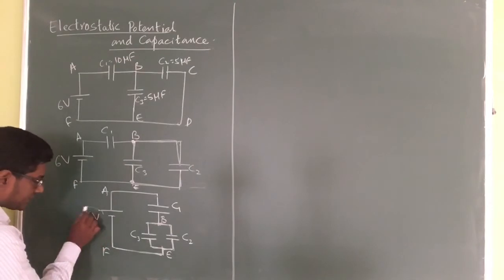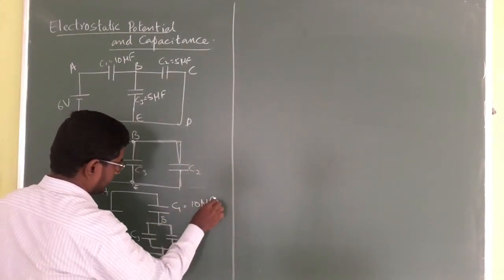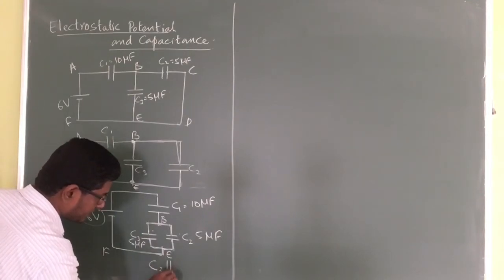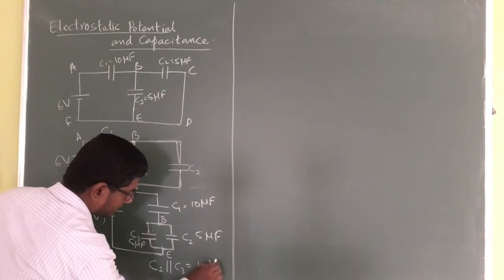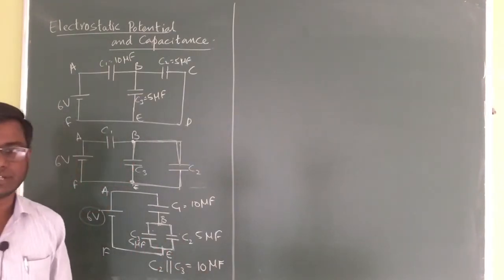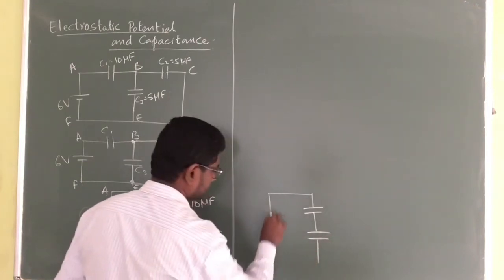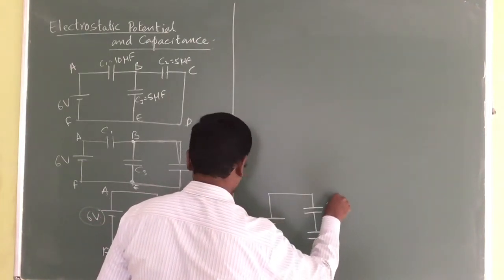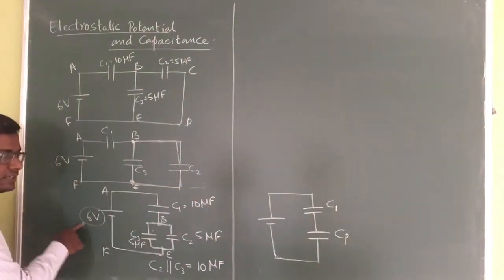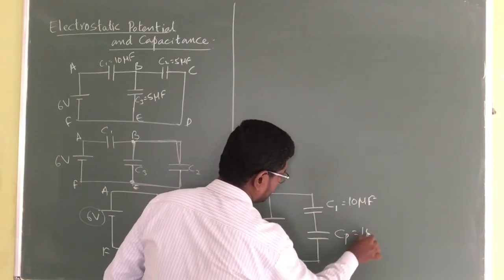This is a 6-volt battery. The values are: C1 is 10 microfarads, C2 is 5 microfarads, and C3 is also 5 microfarads. C2 and C3 are in parallel, so I can directly add them — they become 10 microfarads as Cp. I can replace this combination with a single equivalent capacitor Cp. So what I have is C1 equal to 10 microfarads and Cp also equal to 10 microfarads, with 6 volts applied.